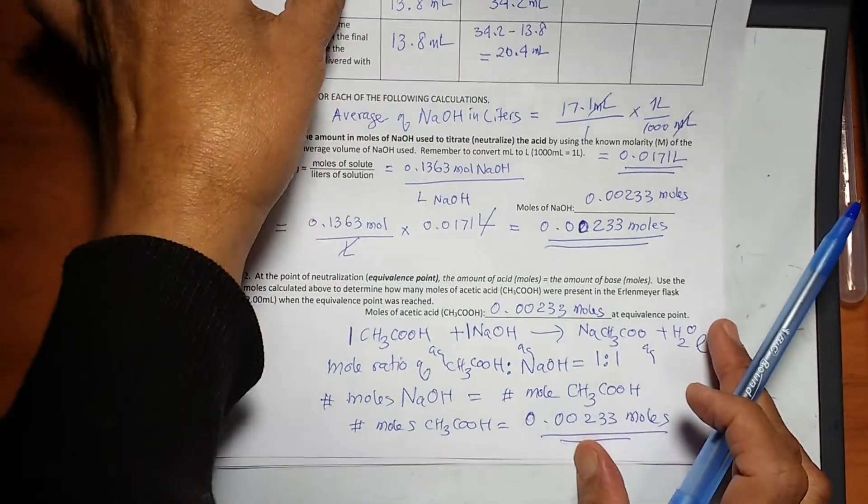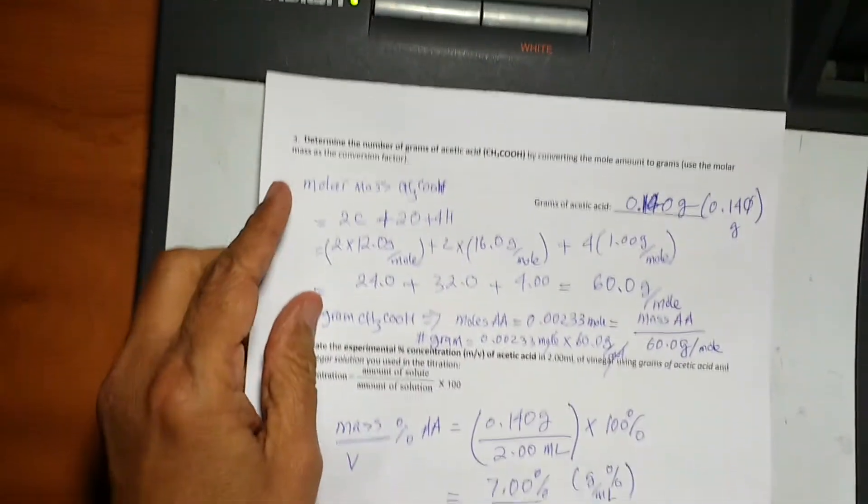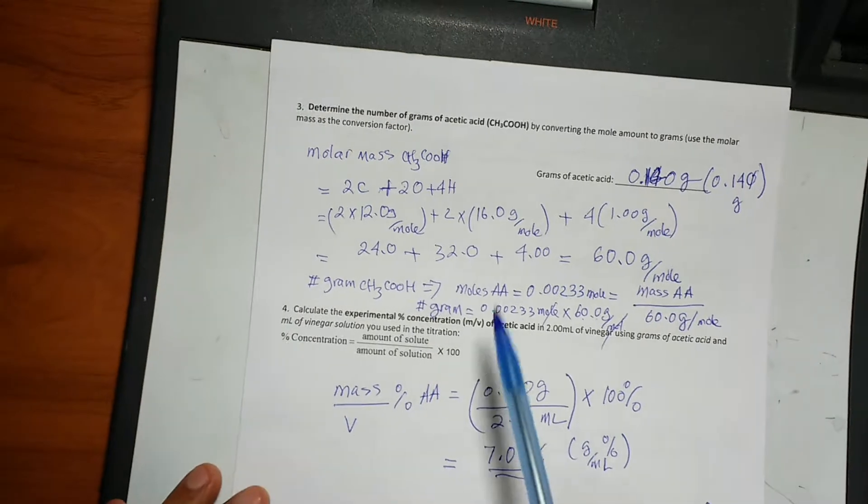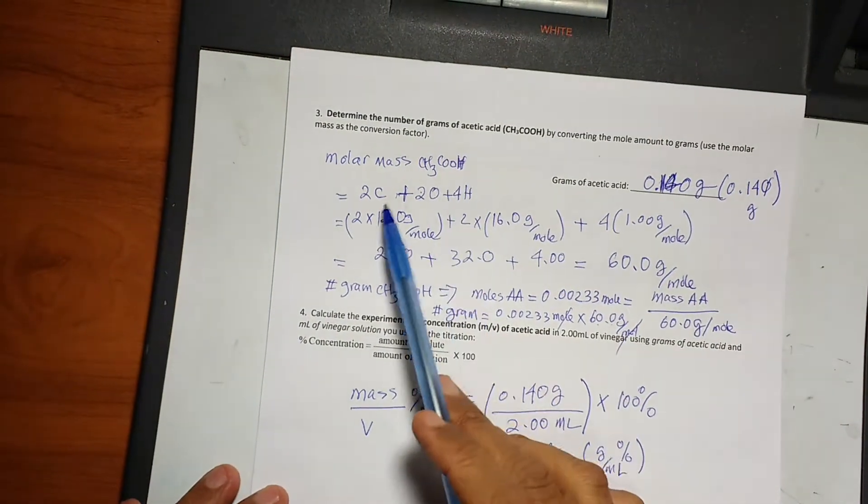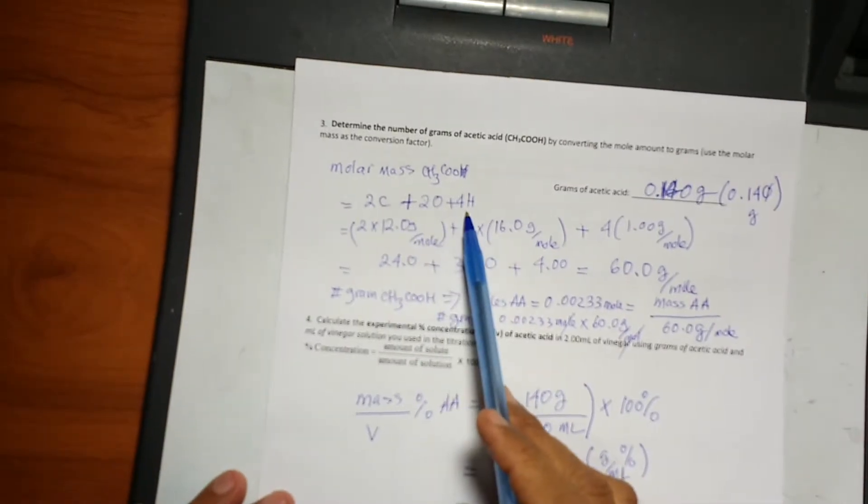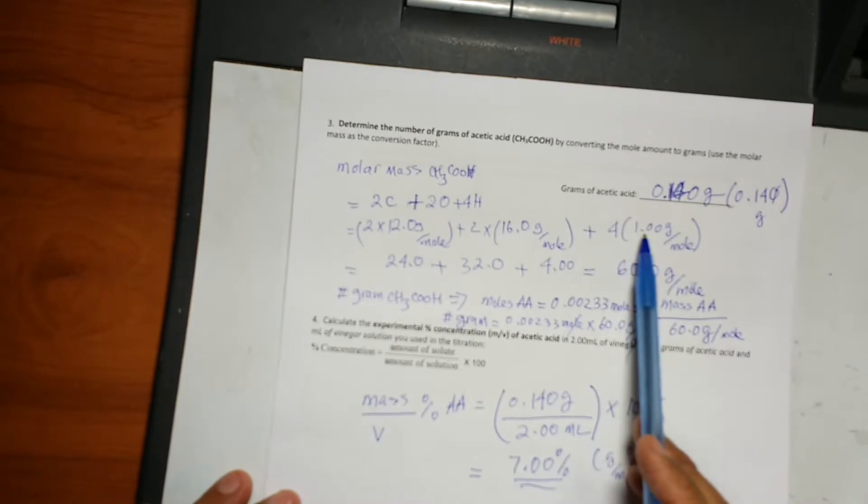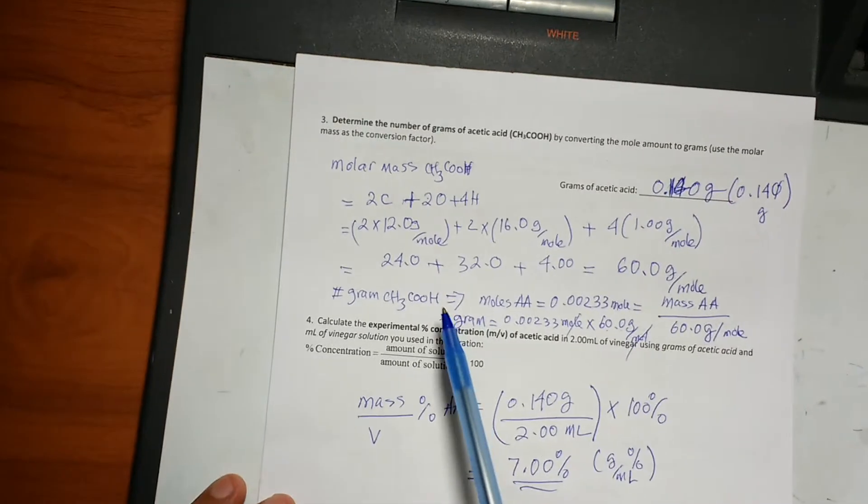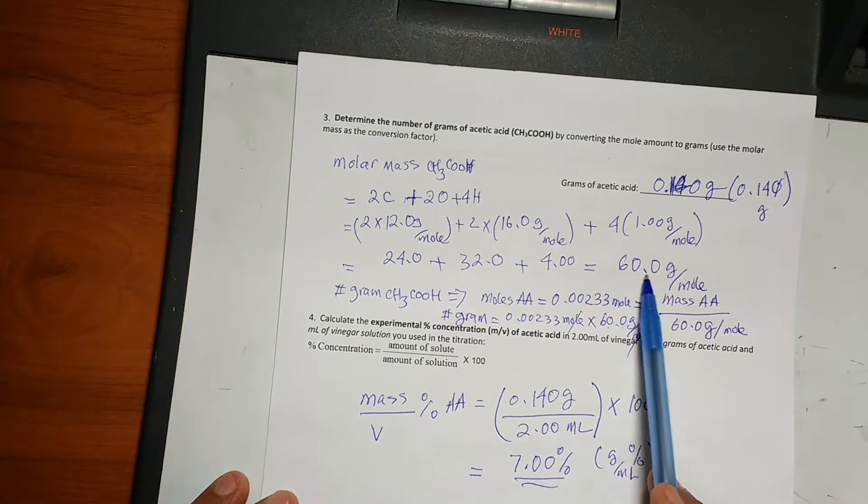Now we have to convert this into grams. That will be in the next step here. We need the molar mass. The molar mass of acetic acid CH3COOH, we have two carbons, two oxygens, and four hydrogens. You put all those atomic masses of each element, and we come up with molar mass acetic acid to be 60.0 gram per mole.